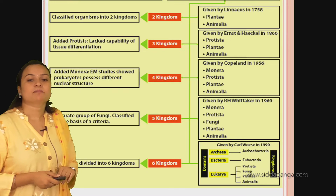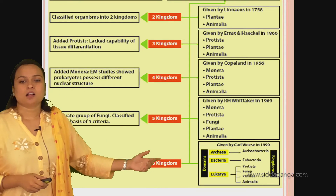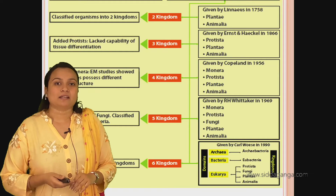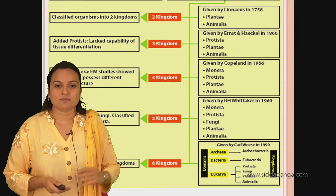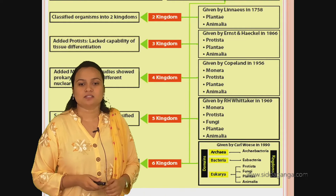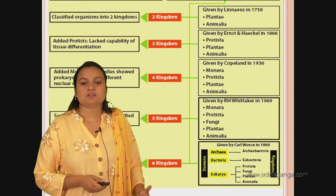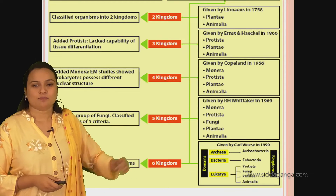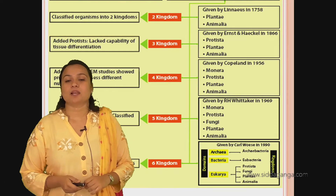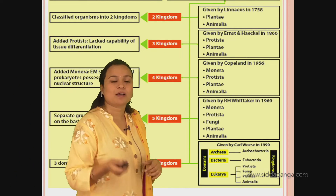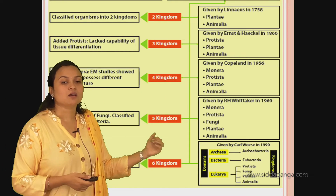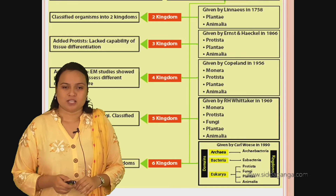The five-kingdom classification we are studying now is that done by R.H. Whittaker: monera, protista, fungi, plantae, and animalia. Later, Carl Woese in 1990 introduced the domain concept - whether they are prokaryotes or eukaryotes. In prokaryotes like monera, he further subgrouped into Archaebacteria and Eubacteria. And in eukaryotes: protista, fungi, plantae, and animalia. This was the classification done by different biologists over the years.